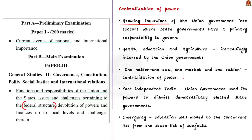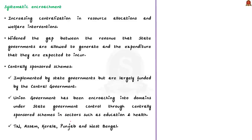Union encroachment of states' power is not something new. In post-independent India there have been several instances where the union government used its powers to dismiss democratically elected state governments. Another example is the emergency of 1975 — during which education was moved to the concurrent list from the state list. According to the author, the present central government has taken a systematic approach to the centralization of power.